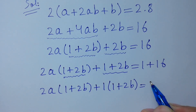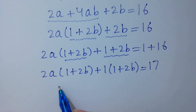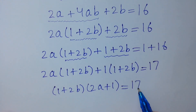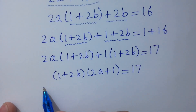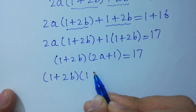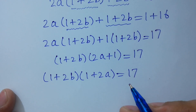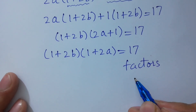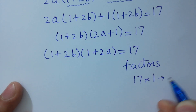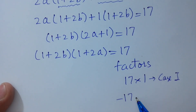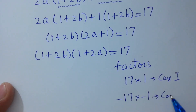This gives us the factorized form: (1 plus 2√b)(1 plus 2√a) equals 17. Now we find factor pairs of 17: case 1 is 17 times 1, and case 2 is minus 17 times minus 1.